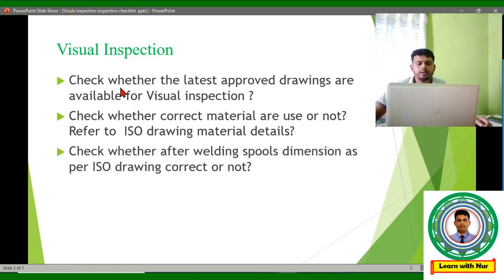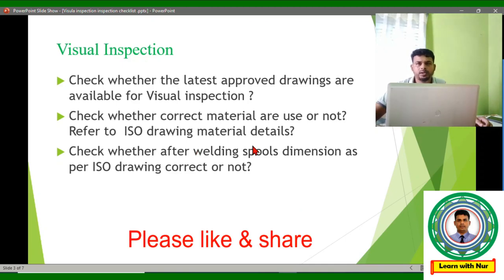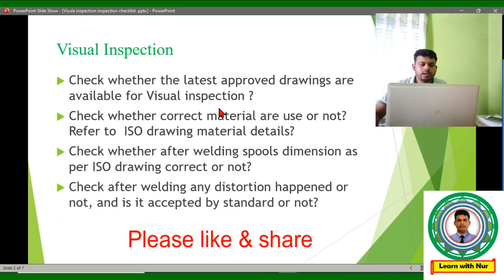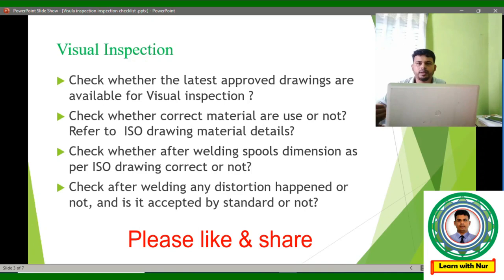After welding, we have to check the dimensions again, because due to welding the dimensions can change — there can be misalignment or distortion. That is why we check the dimensions again during visual inspection. We also check whether any distortion happened during welding due to heat input or uncontrolled welding, and whether that distortion is within the accepted limits per the applicable standard.